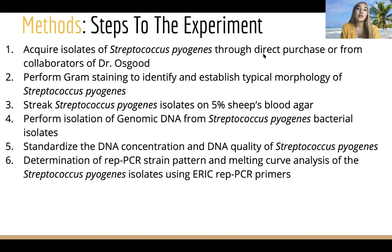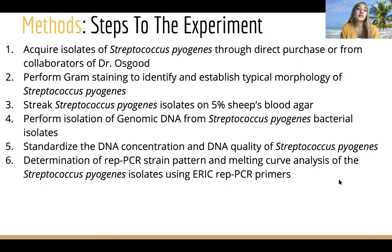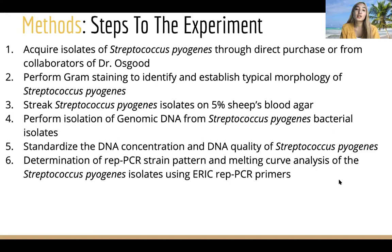Our experimental steps are: first, acquire isolates of Streptococcus pyogenes through direct purchase or collaborators of Dr. Osgood. Second, perform Gram staining to identify and establish typical morphology. Third, streak Streptococcus pyogenes isolates on 5% sheep blood agar. Fourth, perform isolation of genomic DNA from bacterial isolates. Fifth, standardize DNA concentration and quality. Sixth, discriminate real-time PCR strain patterns and melt curve analysis using ERIC real-time PCR primers.